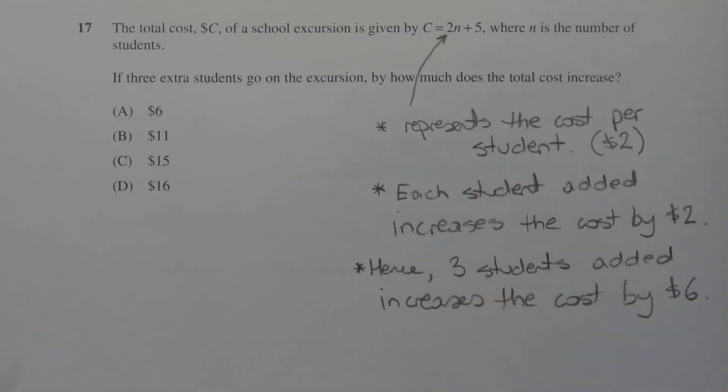Question 17. This equation is a linear equation. In other words, if we were to graph c equals 2n plus 5, where c is the y-axis and n is the x-axis, we would get a straight line.